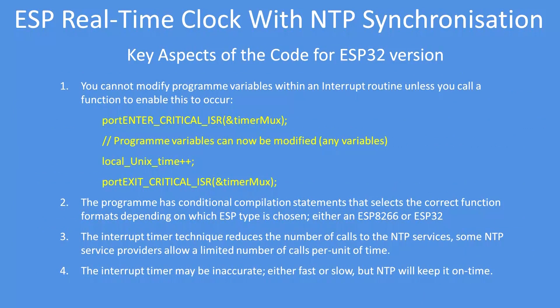The only thing you need to be aware of with the ESP32 version — and again the examples are on GitHub — is that when calling interrupt services in your interrupt service routine, you must invoke a macro that prevents local variables from being corrupted. You enter your ISR, increment or change your variables or test your ports, and then exit. You must enter and exit the interrupt service routine with those commands shown.